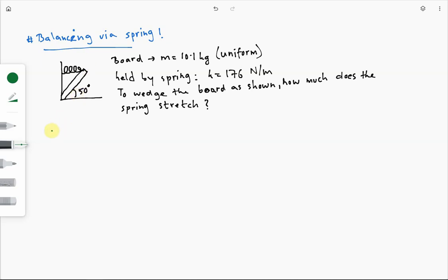Okay, so let's look at this example of balance or equilibrium. In this problem, we have a uniform board again. Uniform, let me remind you, just means that center of mass is at center of that board, okay, is at midpoint.